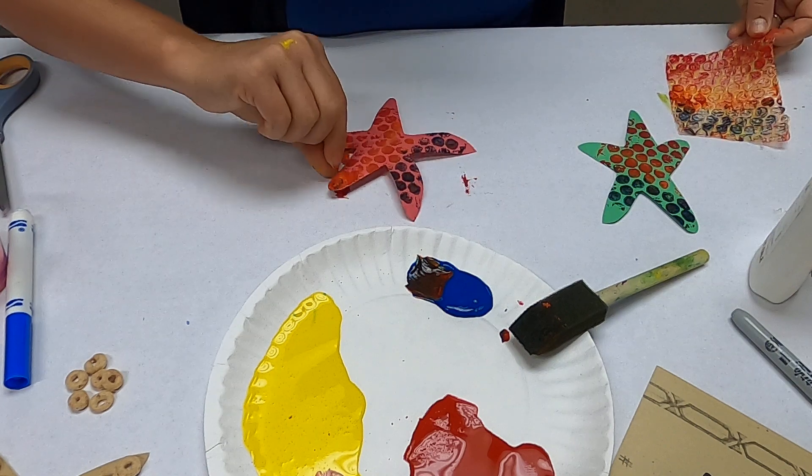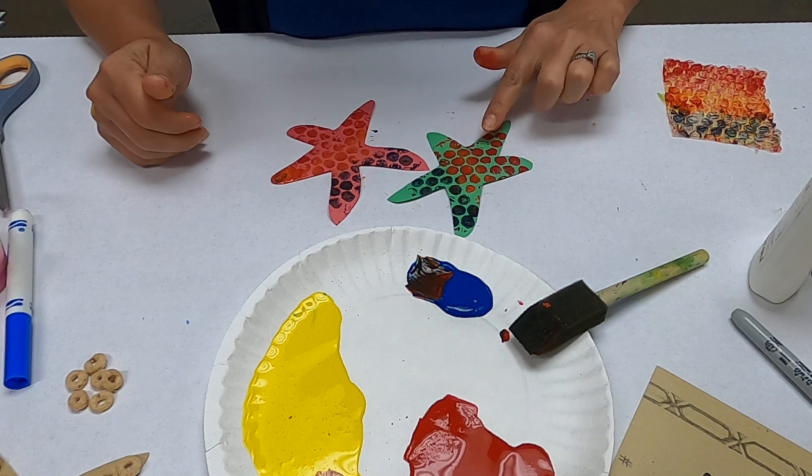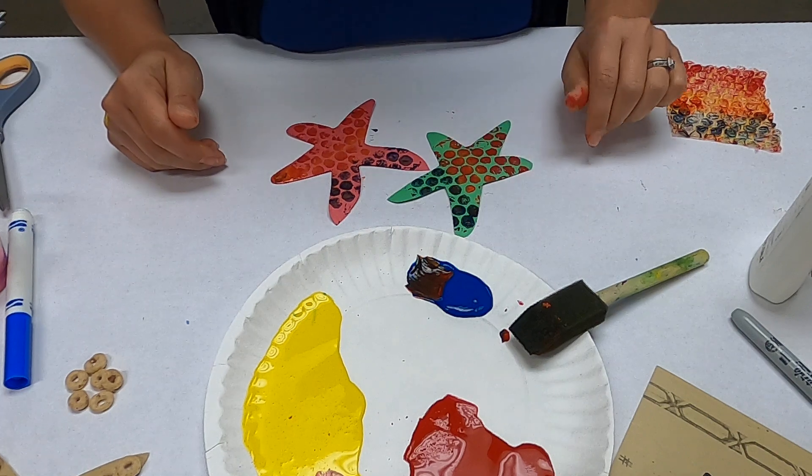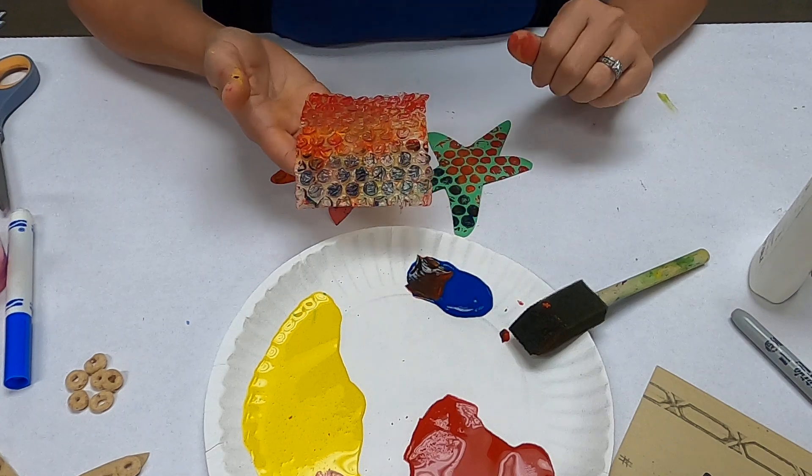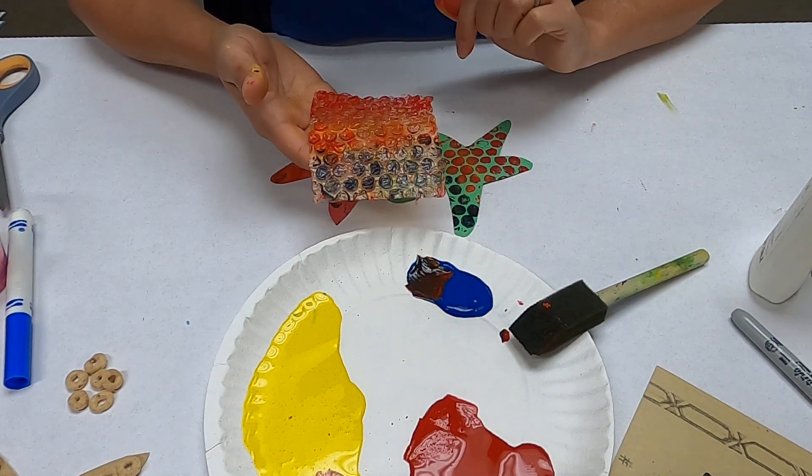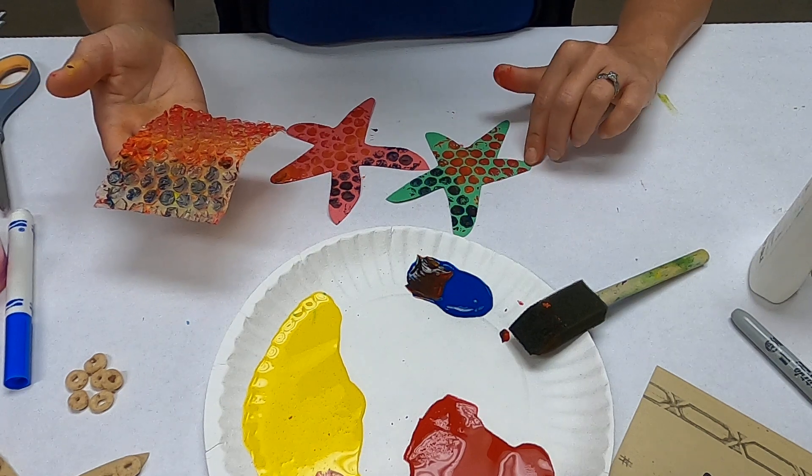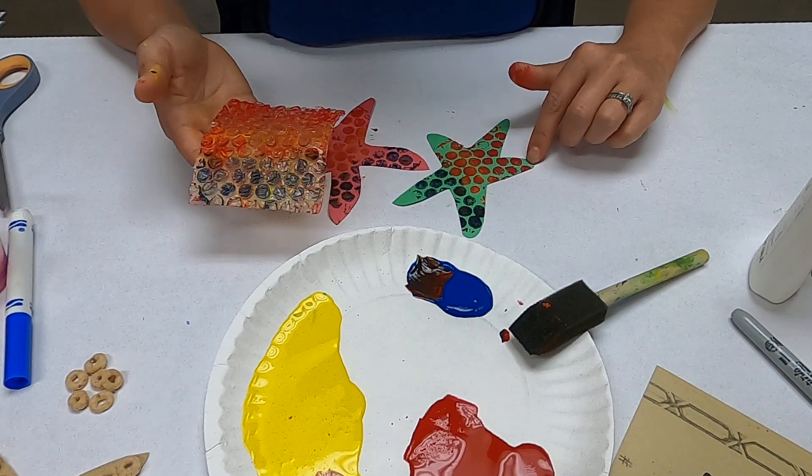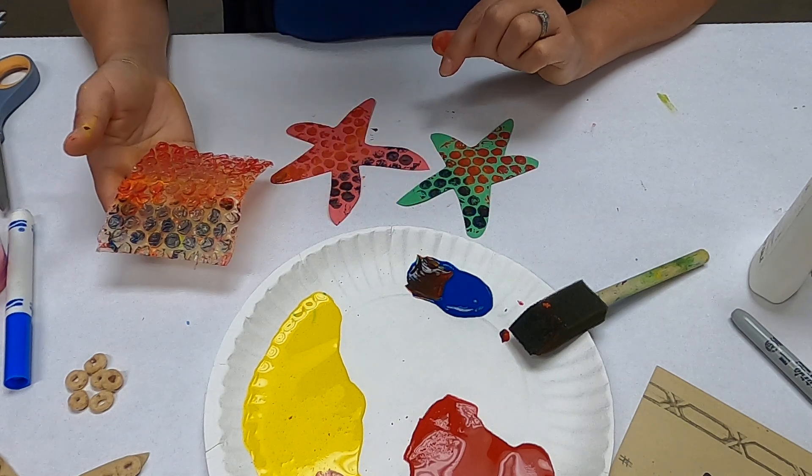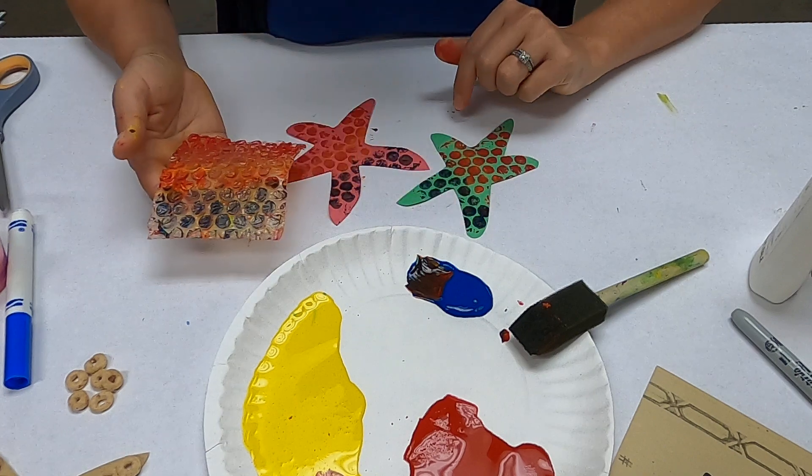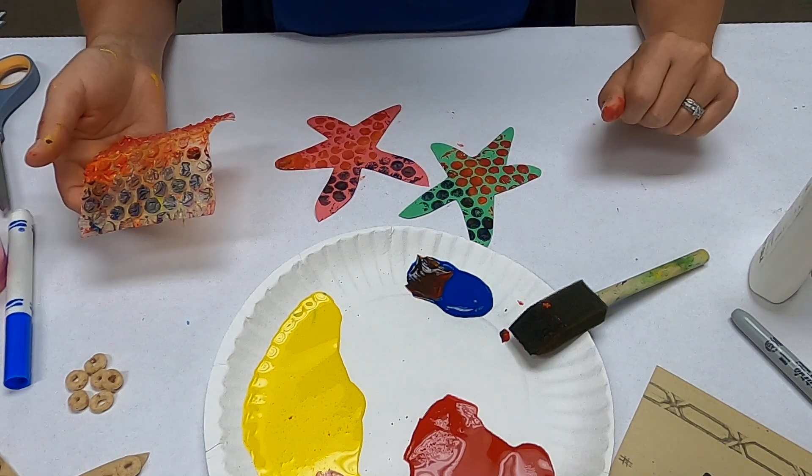And then there you have it, those are your little colorful starfish. Those are the little suction cups on the starfish that way. Your bubble wrap you can go ahead and rinse it off and you can start over again. You can do different color combinations, different sizes of starfish. This is a fun activity to do with adults as well. Bubble wrap is a really fun and versatile material, so you can reload it, rinse it off and start over.